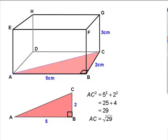And so AC is the square root of 29. Now, the calculator would tell you that to three significant figures, that's 5.39. So we've got root 29 or 5.39 as our length of AC.